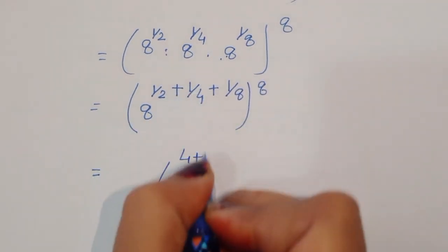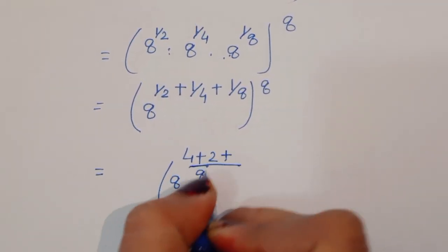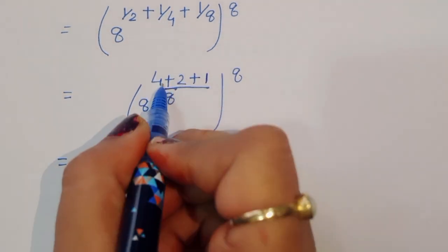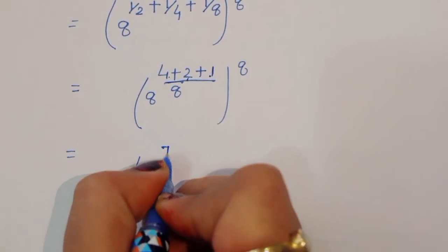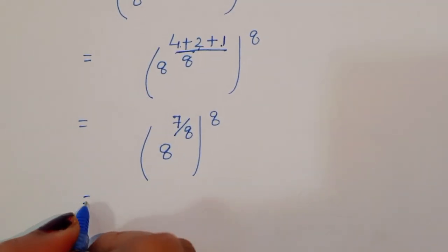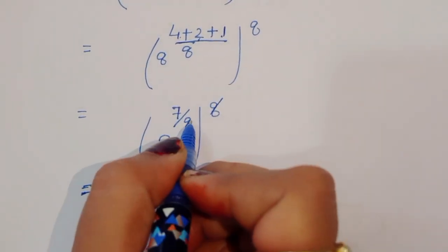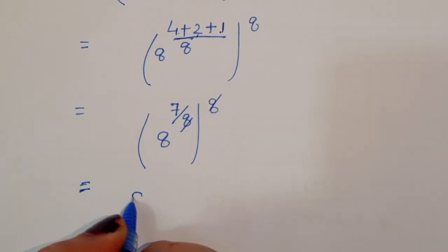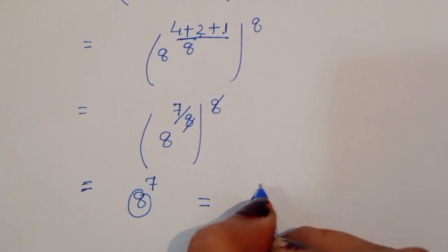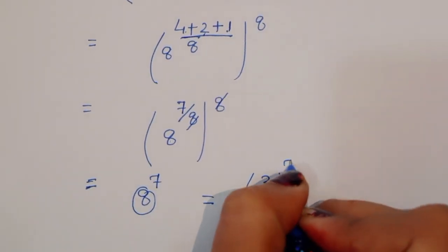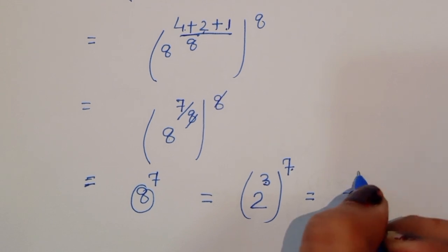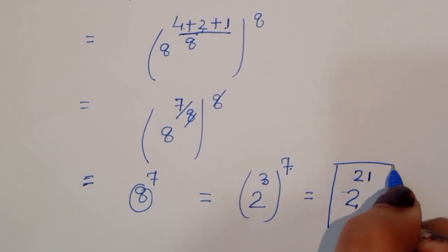Taking LCM of 2, 4, and 8 gives us 8. So we get 4 by 8 plus 2 by 8 plus 1 by 8, which equals 7 by 8. So we have 8 power 7 by 8, raised to power 8. The 8s cancel, leaving 8 power 7. Writing 8 as 2 power 3, we get 2 power 3 times 7, which is 2 power 21. This is the solution.